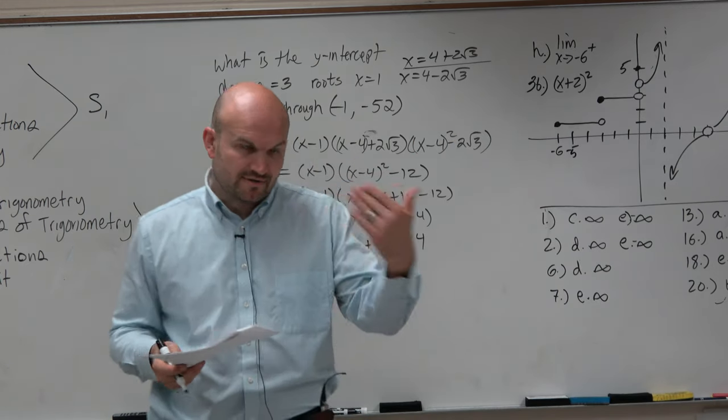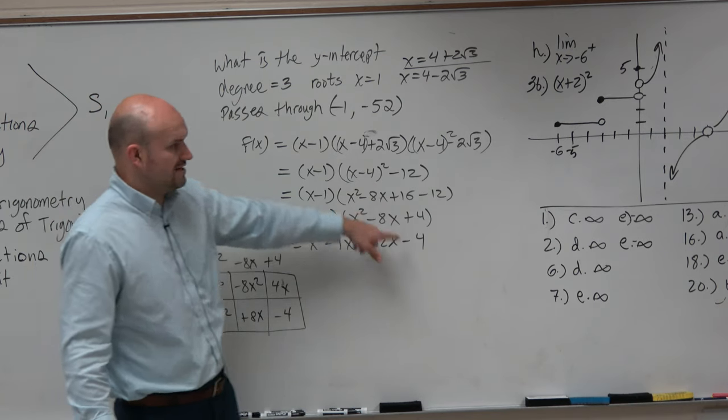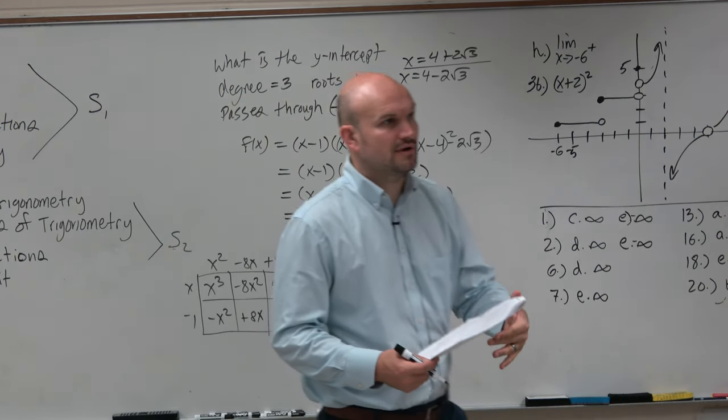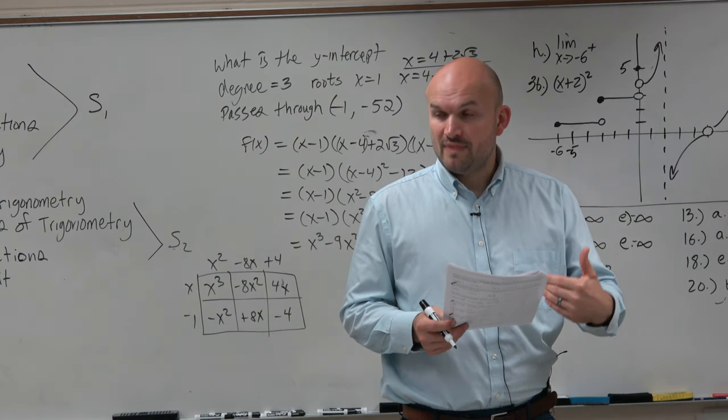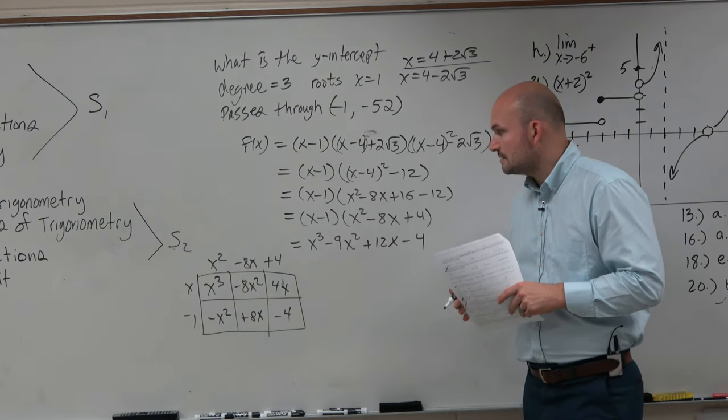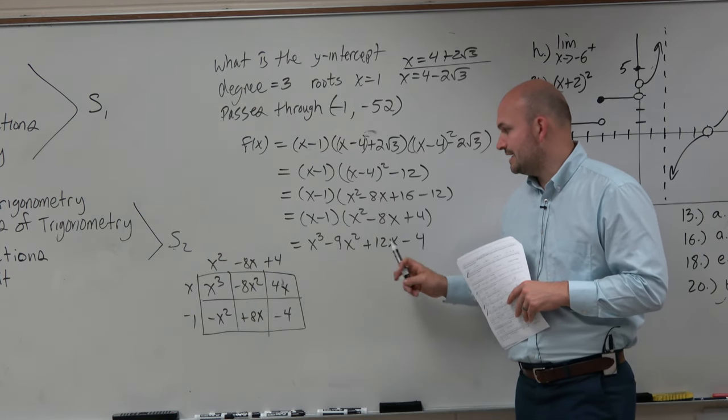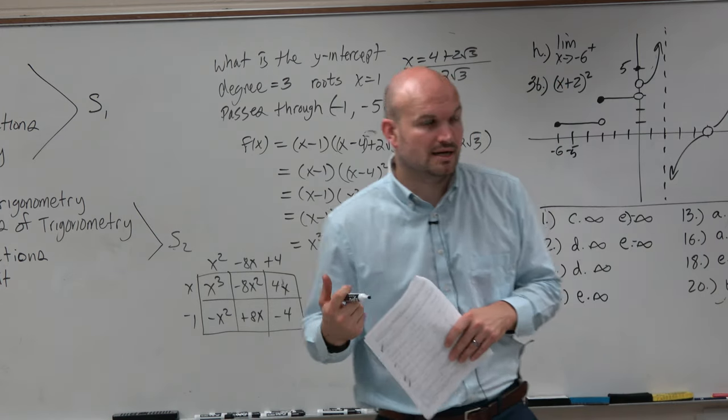So as you guys can see, if I was to plug 0 in for x right now, I would not get a y-intercept of negative 4, which is not an answer choice, right? So that's why that restriction here for that point can make a difference.